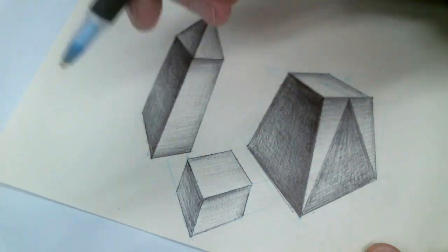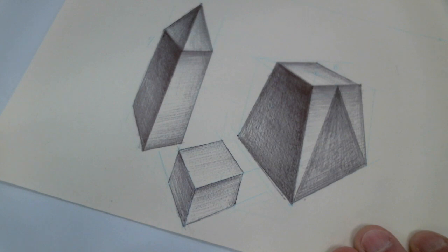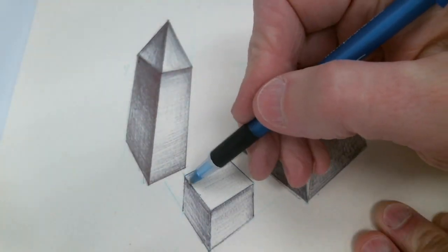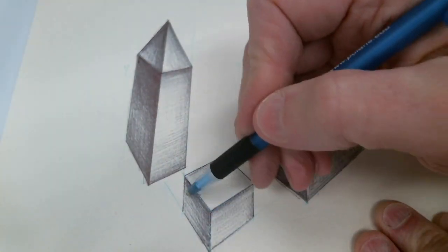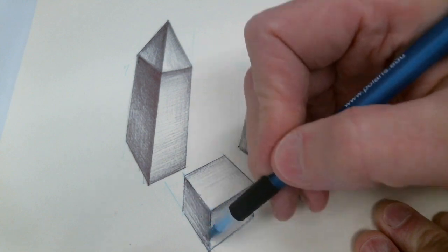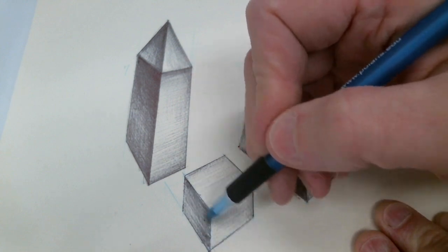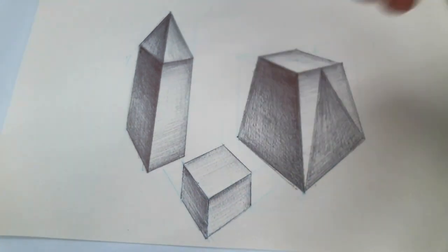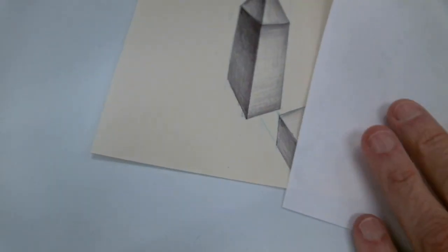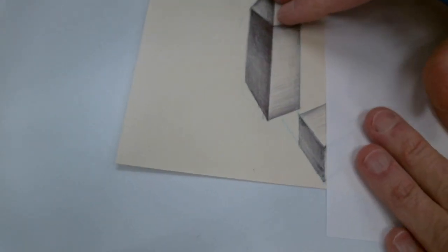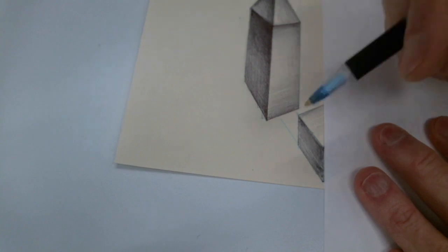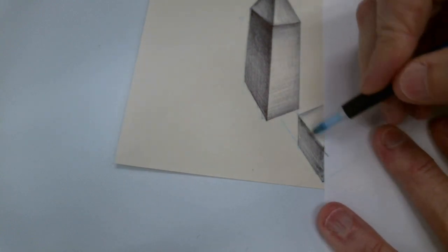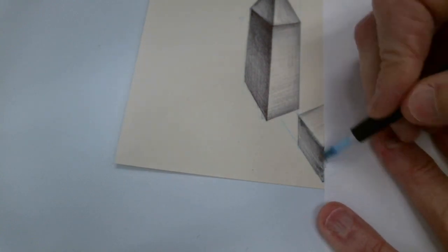So the light of the paper is going to be your actual highlight. Again, you can use an edge of a piece of paper, a scrap piece of paper, just to build that up.